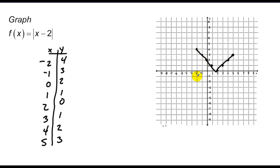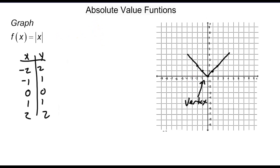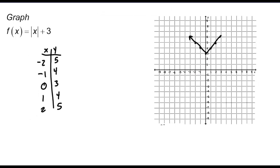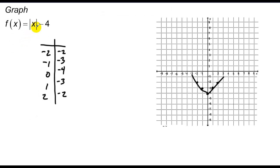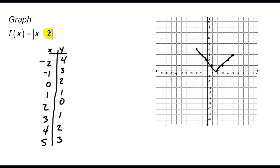Something else is going on here. Look at the previous graphs — the numbers were added or subtracted on the outside of the absolute value sign. But in this problem, we have a number inside the absolute value sign. That's got to make some kind of difference.